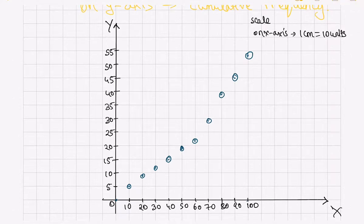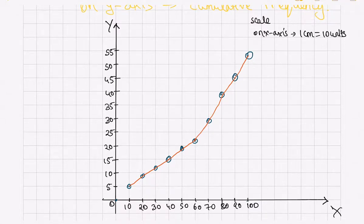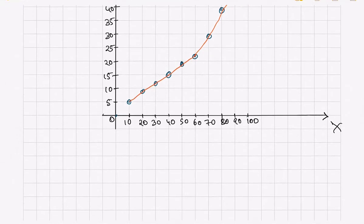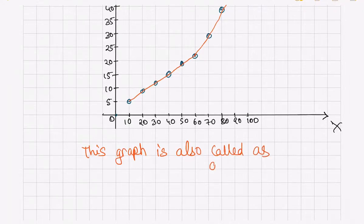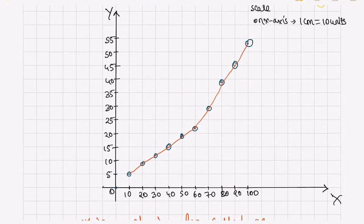Our next job is to join all these points, so you simply join all these points by a smooth curve. Thus we have drawn the cumulative frequency curve, which is also called an ogive. In this way we have drawn the ogive. Our next task is to find the median from this ogive.